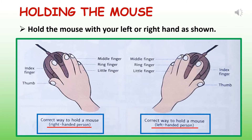This will slightly vary depending on whether you are a right-handed or left-handed person. A right-handed person is someone who uses the right hand to hold a pencil, to eat, etc. For most of you who are right-handed, you will use the index finger on the left mouse button and the middle finger on the right mouse button, as shown in the picture on your screen.